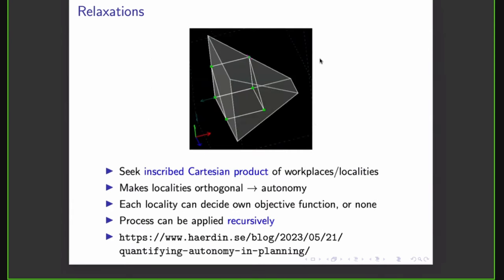More recently, I've been investigating a method revolving around inscribing the cartesian product of multiple workplaces slash localities. And a locality in this case could be, for example, a geographic location, a municipality, a workplace, or even departments within the workplace. And this cartesian product thing makes all of these localities orthogonal. And from this orthogonality, we directly have autonomy. And this means that each locality can decide their own objective function, or even none at all. And this process can be applied recursively. And I thought I'd explain a little bit how it works.